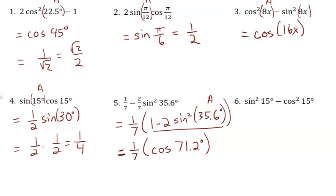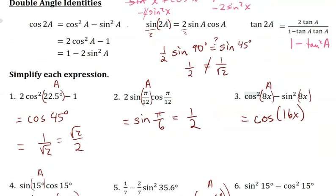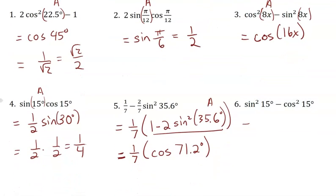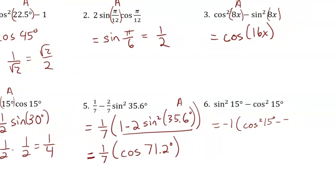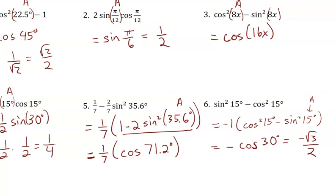For sine squared of 15 minus cosine squared of 15: this is close to cosine squared minus sine squared, but the order is reversed. If we pull out a negative 1, it becomes negative times cosine squared 15 minus sine squared 15. So that's negative times cosine of 2 times 15, which is negative cosine of 30, which is negative root 3 over 2.